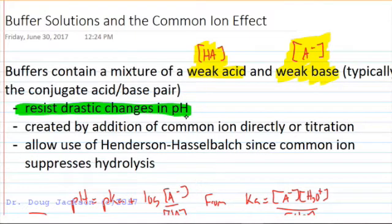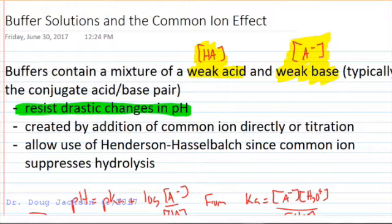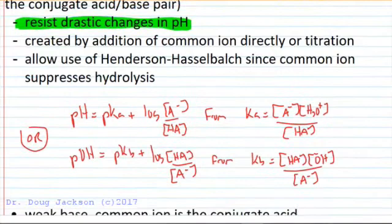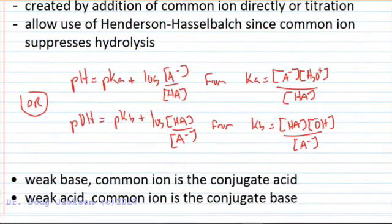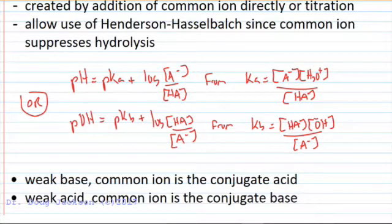In the process we create some of its conjugate pair. And because buffers have measurable quantities of the weak acid and weak base at the same time, it allows us to use the Henderson-Hasselbalch equation, which drastically simplifies our calculation of pH if we're given the Ka or pKa value. There are two forms of it.